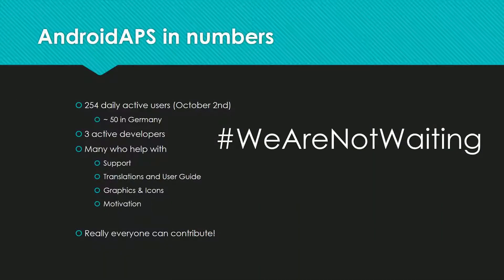A few numbers about Android APS itself. Back when I prepared the slides, we had 250 daily active users worldwide, and it's a fast-growing community — at the moment we already have around 380. In Germany we are around 50. Recently a third developer has joined us, and there are many users who help with support, translations, and graphics. Really everyone can help, even if it is just with motivation.